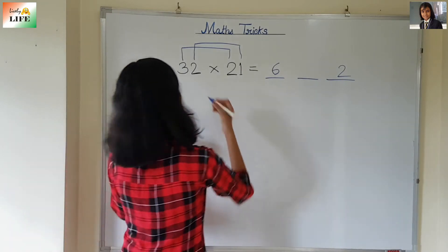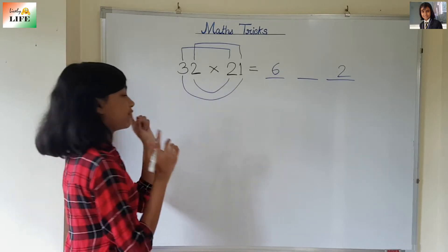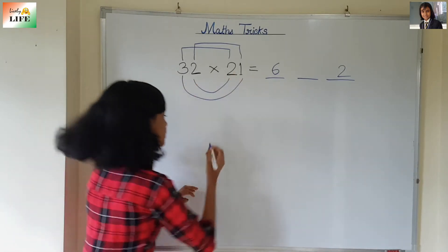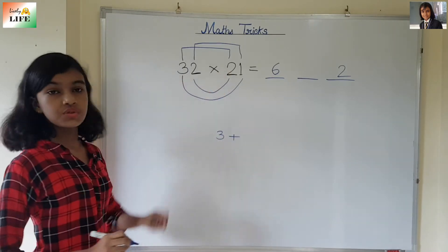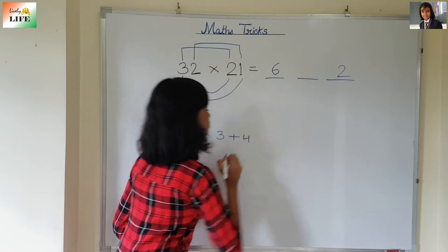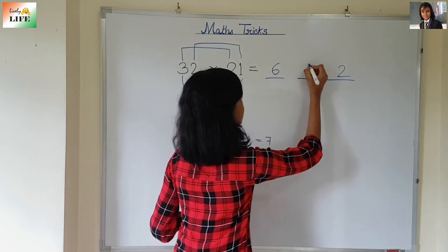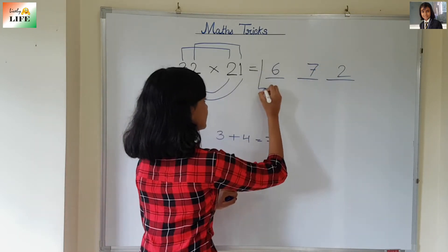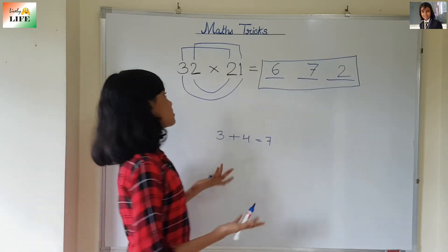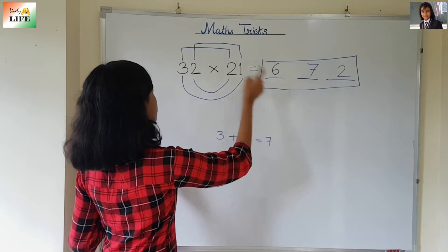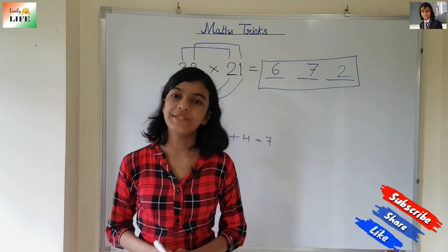And now we are going to do cross multiplication, means 3 into 1 and 2 into 2, and we are going to add them. 3 into 1 is 3, plus 2 into 2 is 4, so 3 plus 4 is 7. In the middle dash it will be 7. This is the answer. Isn't it very easy? You multiply first digits and put here, last digits and put here, then cross multiply, add them, and put in the middle dash.